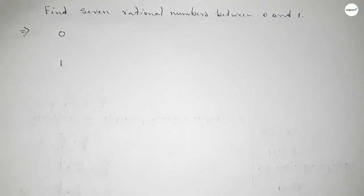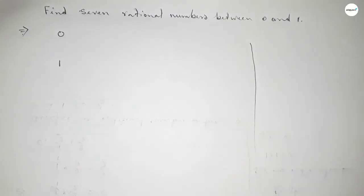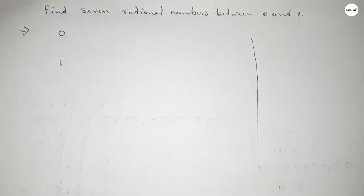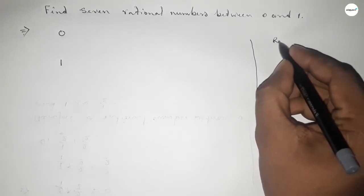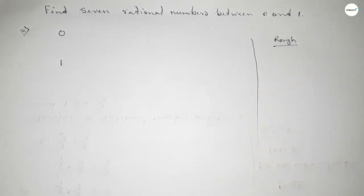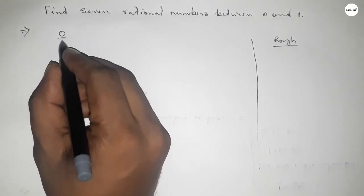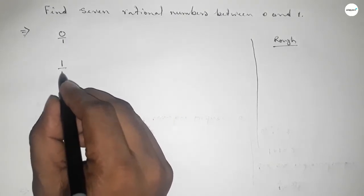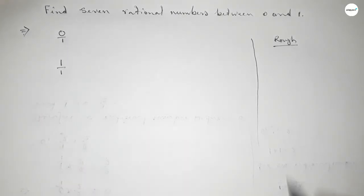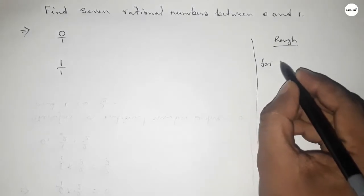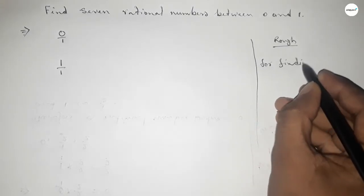Now roughly discussing some calculations here, so this is rough space. Okay, now we can write 0 as 0 over 1 and 1 as 1 over 1. Now for finding seven rational numbers between any two numbers, we have to follow this method.